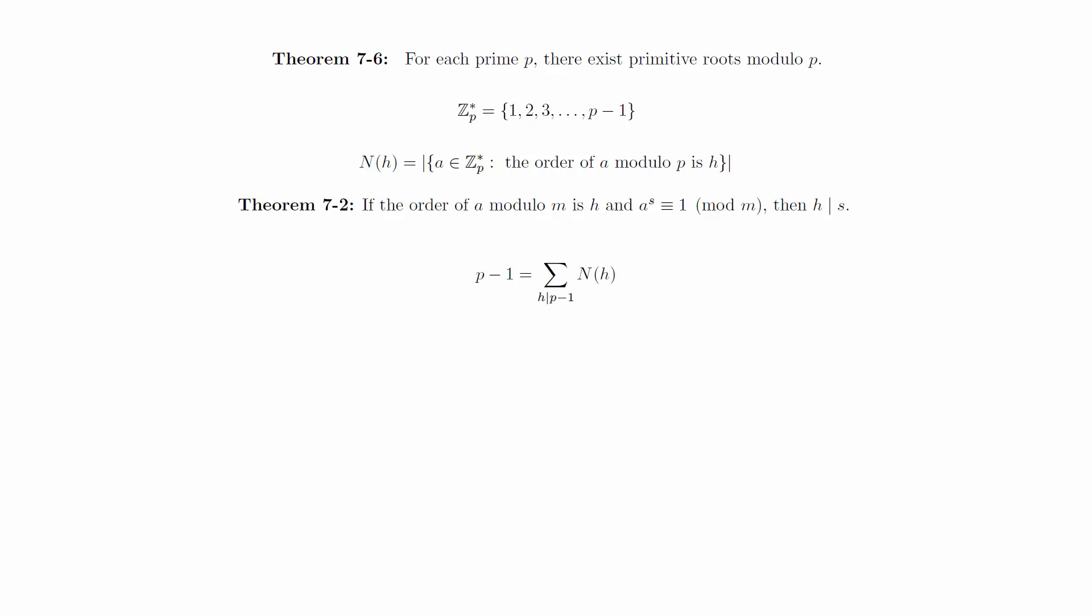We will show that N(h) is either 0 or it's phi of h. If N(h) is 0, then there's nothing to prove. So suppose that N(h) is not equal to 0. Then there exists an a such that a to the h is congruent to 1 modulo p.